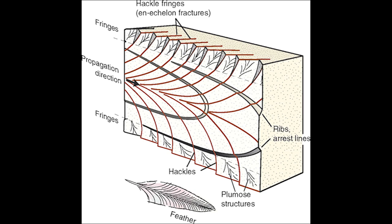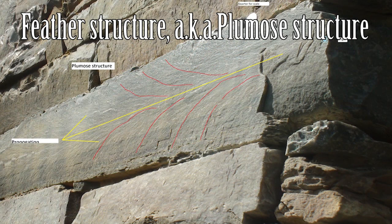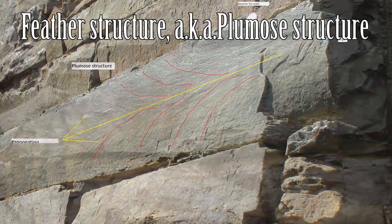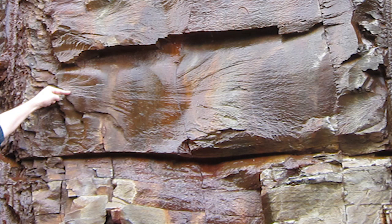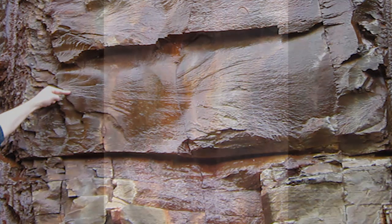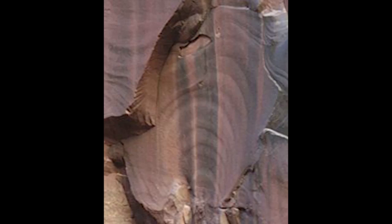These feathery patterns in the rock often originate from a point or small area of initial failure and blow out from there. Looking in the direction the feather structure opens out tells us the direction of the shear stress that helped make the joint. In this case, the rock the feather structure was in was pushed down, and the face that it was against but is now gone was pushed up. That motion will cause the resulting fracture pattern seen here.